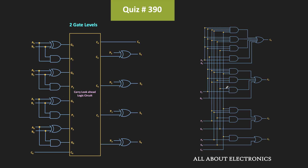The carry lookahead logic is implemented in two gate levels using AND-OR logic. The propagation delay of the AND gate is two time units and the OR gate is also two time units. That means this carry lookahead logic will generate the carry outputs in four time units. Now we need to find the time required to generate the G, P signals as well as the sum outputs.